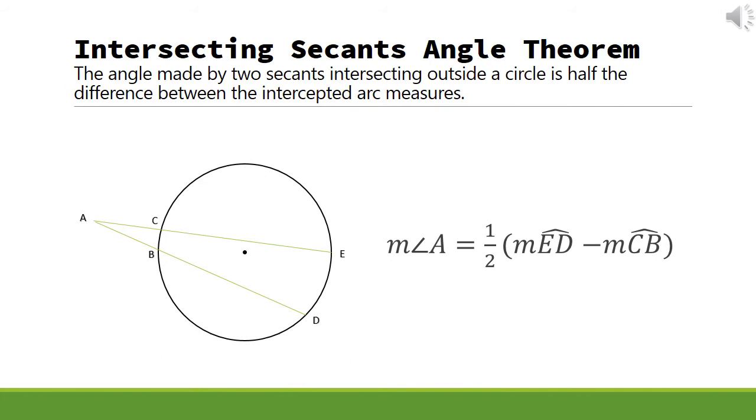For the next theorem, consider the circle with two secants intersecting at point A, intercepting arcs ED and CB as shown. With the intersecting secants angle theorem, the angle made by two secants intersecting outside the circle is half the difference between the intercepted arc measures.